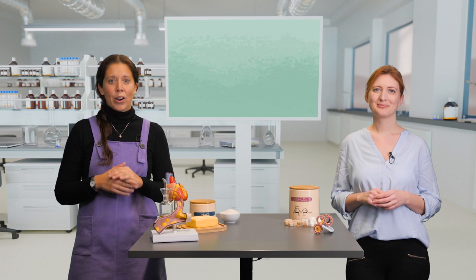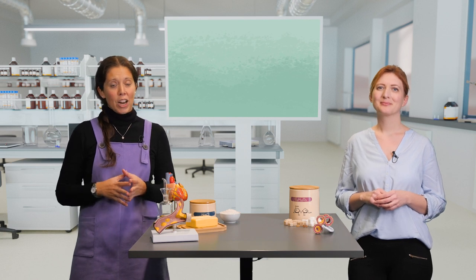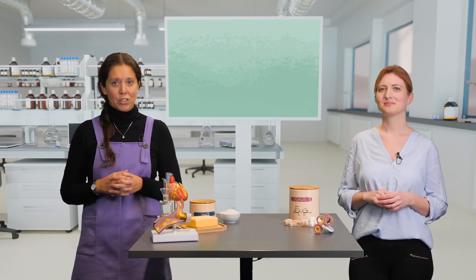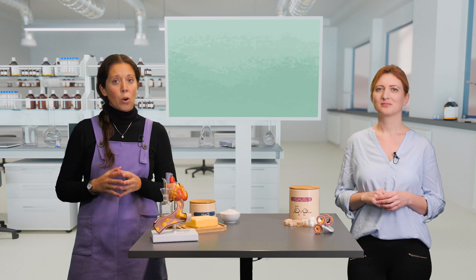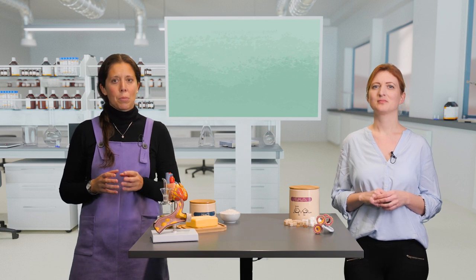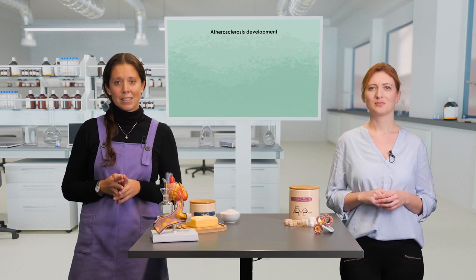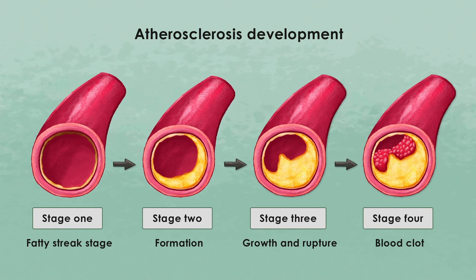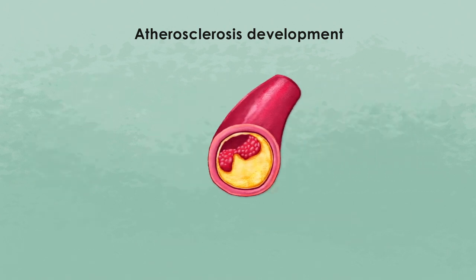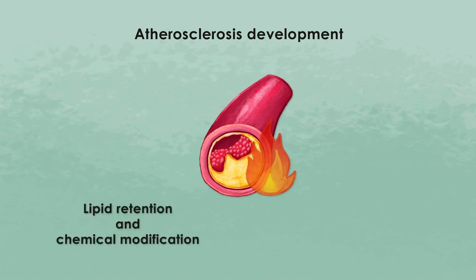In the first video, we heard about the general features of atherosclerosis. Let's now take a closer look at the processes that cause this disease. As we said, atherosclerosis involves a lifelong continuum of changes in the arterial wall. These changes include lipid retention and their chemical modification, which provokes chronic inflammation in the arteries.